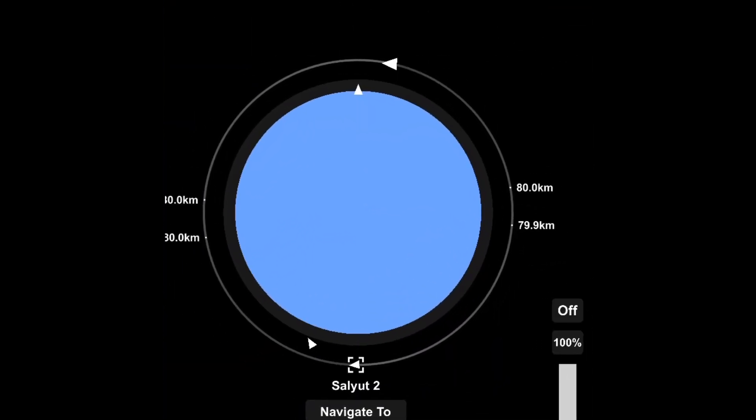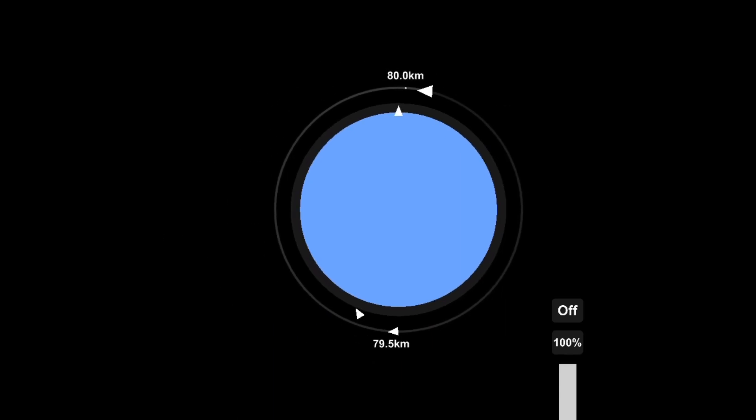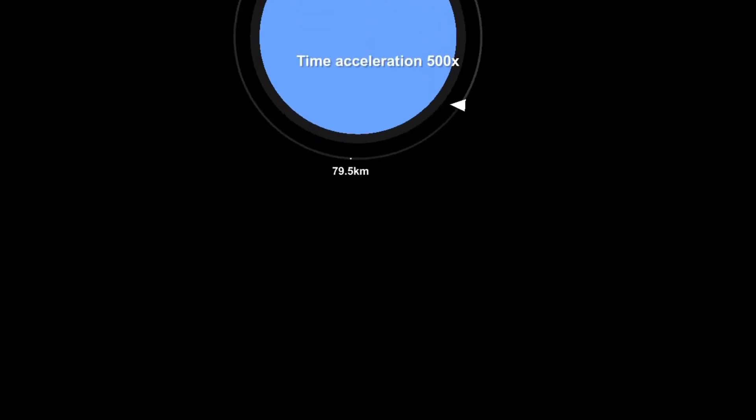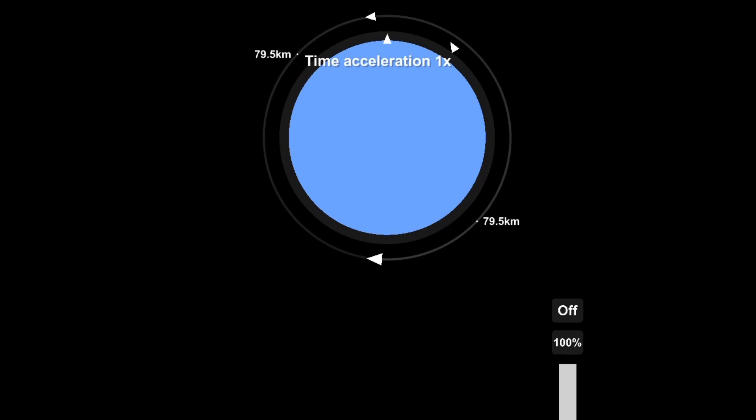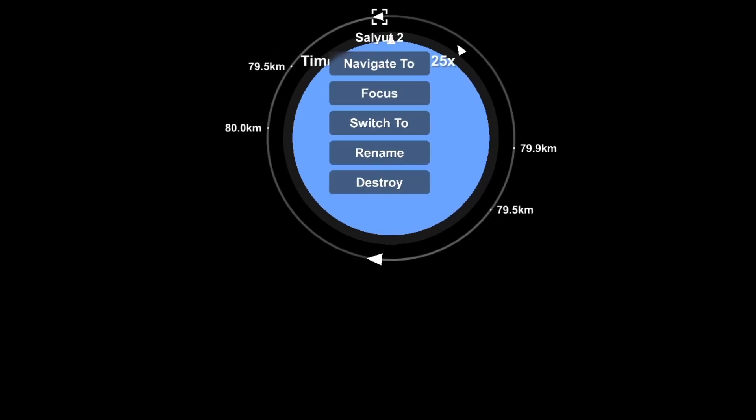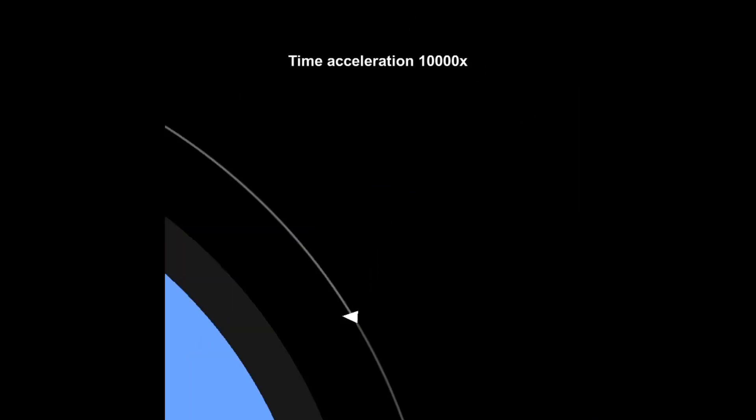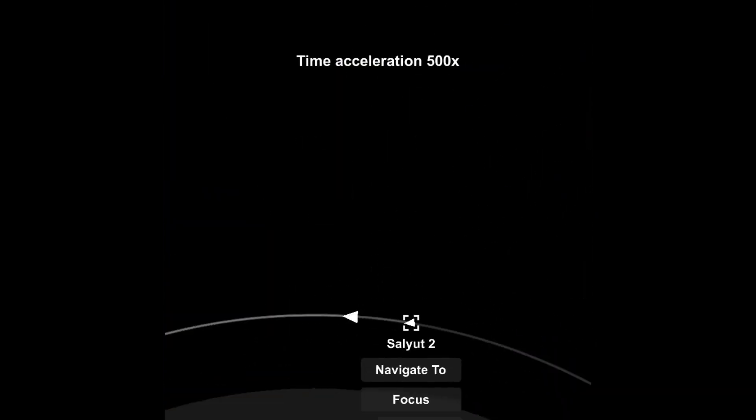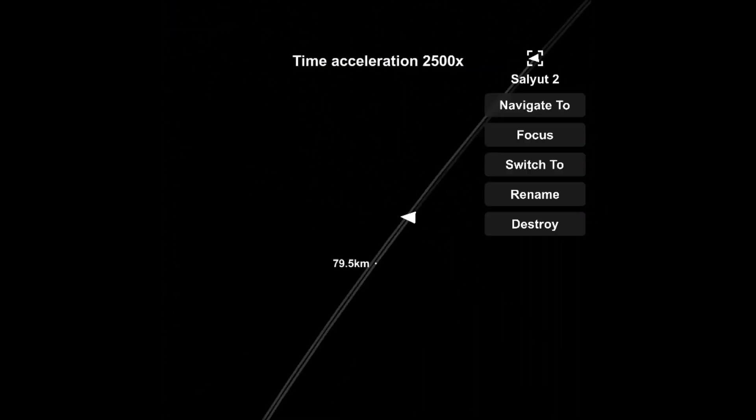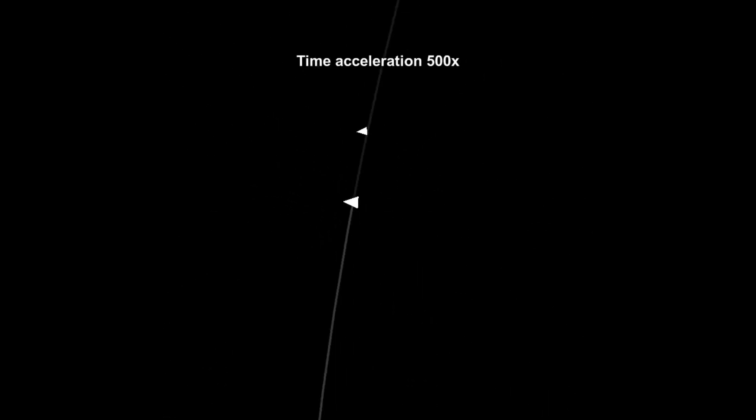Right there I realized I needed to go into a lower orbit to actually catch up with the space station because I was just orbiting at the exact same height and that wasn't doing anything. You can now see it's actually getting closer right there. That's not really the best rendezvous method but I use it because it's easy for me.